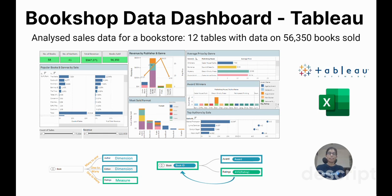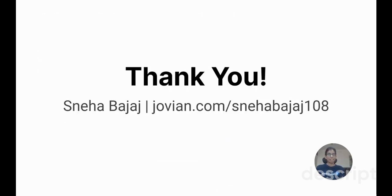My last project is an interactive sales dashboard for a bookstore using Tableau. I looked at key metrics such as total revenue, number of books sold, and number of books and authors. Using Microsoft Excel, I analyzed sales by month, genre, publisher, and format. I found that sci-fi and fantasy were the highest-selling genres, consisting of three of the top five bestsellers. The publisher with science fiction titles contributed 70% to the revenue. Bianca Thompson was the author with the most awards. Children's books had the lowest average pricing, while non-fiction and memoirs had the highest. Thank you for watching — to know more about my projects, please visit my Jovian profile.